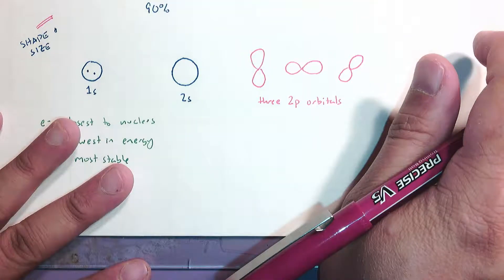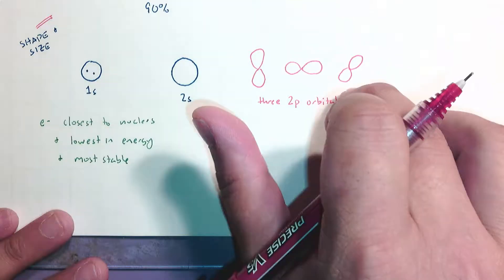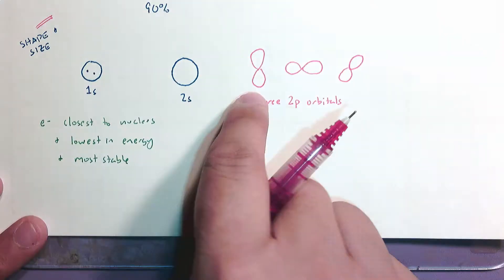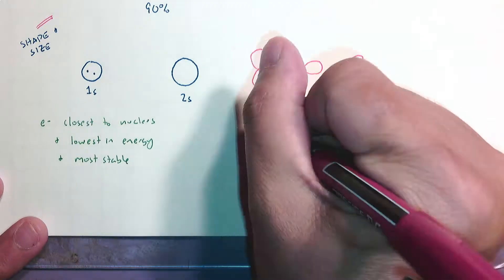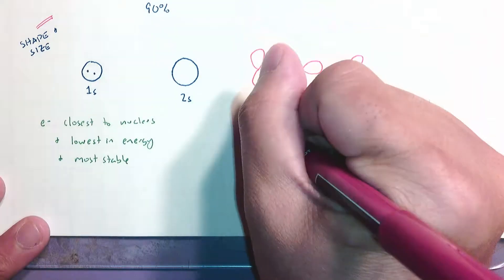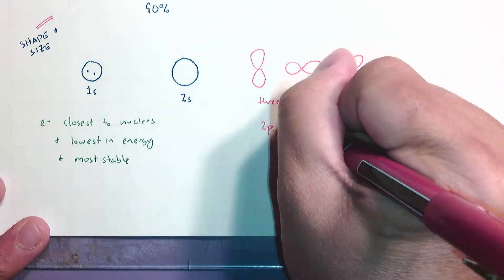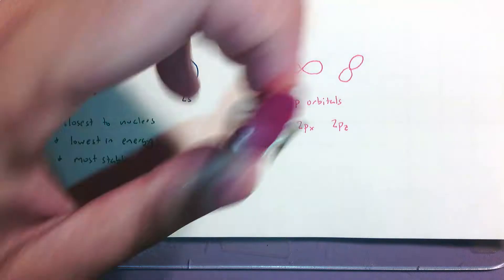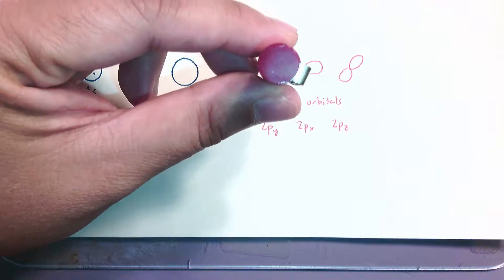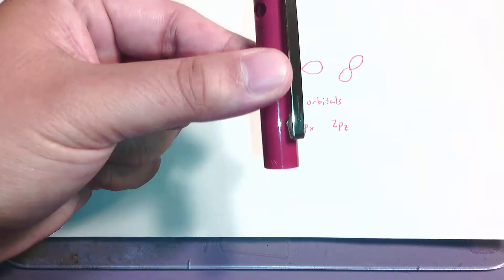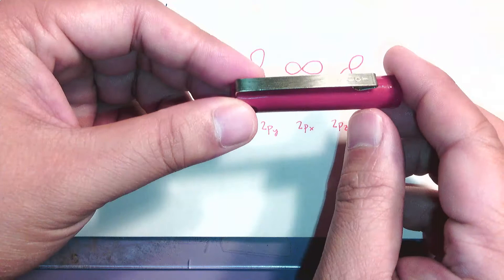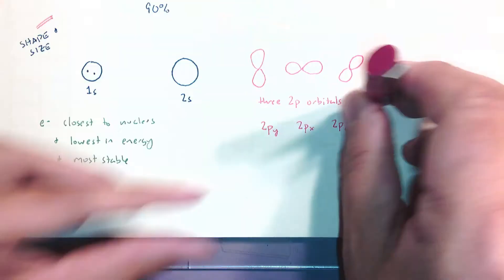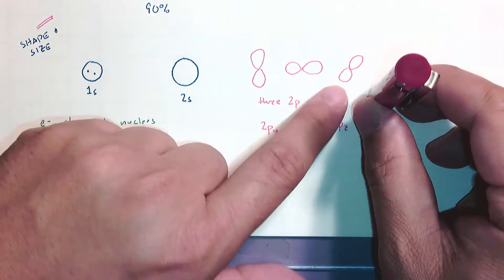These are the 2p orbitals and there are three of them. Some textbooks differentiate between the three — they all have the same shape but different orientations based on axis direction. I like to know these as 2py (up and down), 2px (left and right), and 2pz (coming toward you and away from you, like this pen cap). So that's the y, x, and z directions — z is very hard to draw on a flat piece of paper so I drew it slanted.